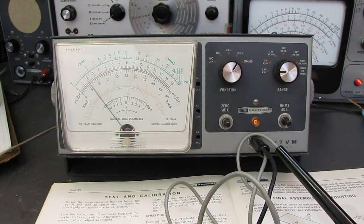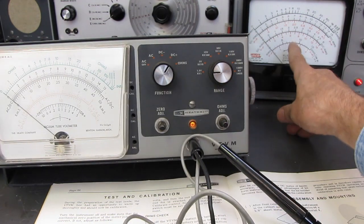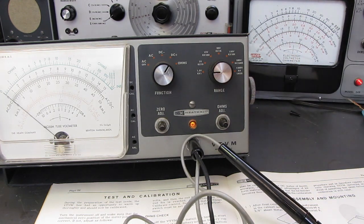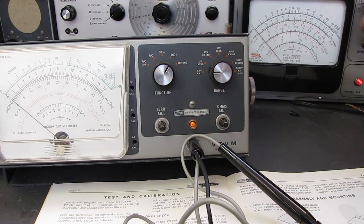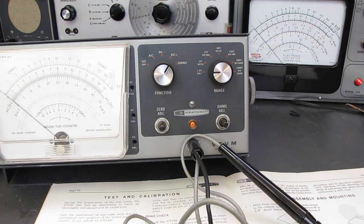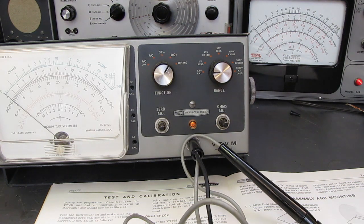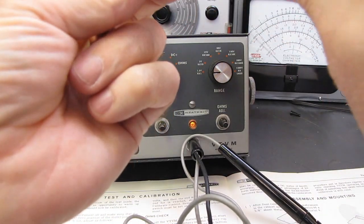Set the range switch to 1.5. It's 1.5. And the probe to DC. Now, on your VTVM probes, you're going to have a DC position and an AC ohms position. So we'll set it to the DC position. Connect to a flashlight battery. Adjust the DC calibrate so the meter pointer falls directly over the small red dot. Now, that was for carbon zinc batteries back in the day.